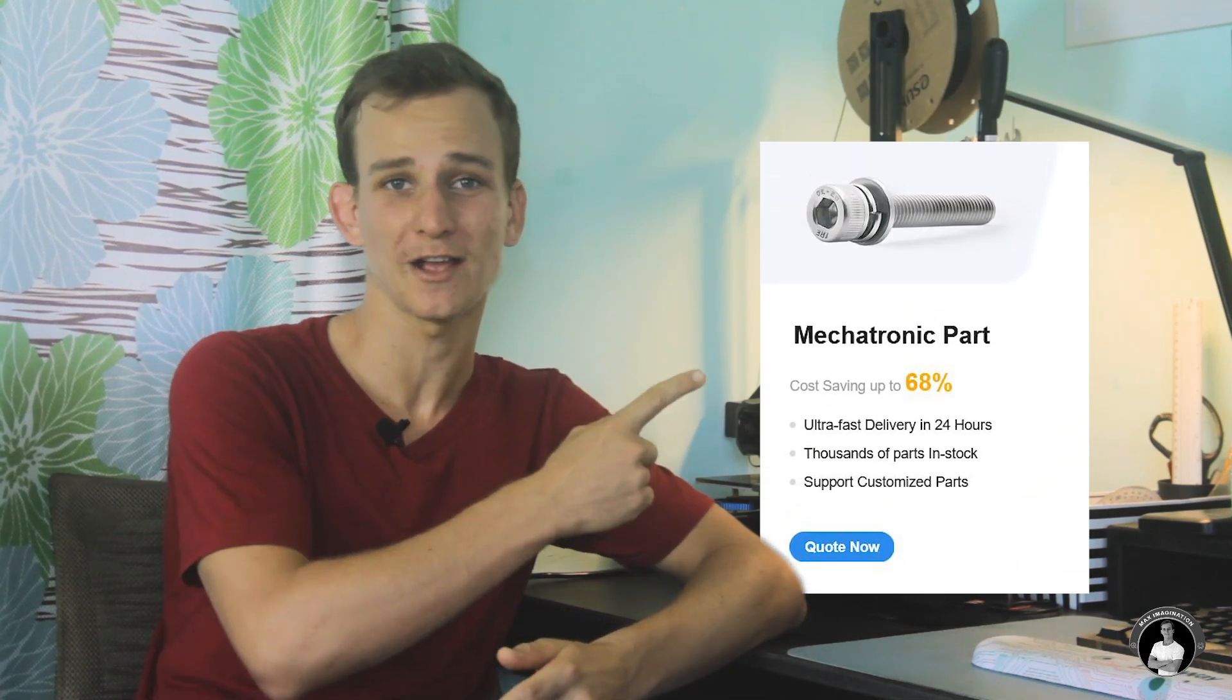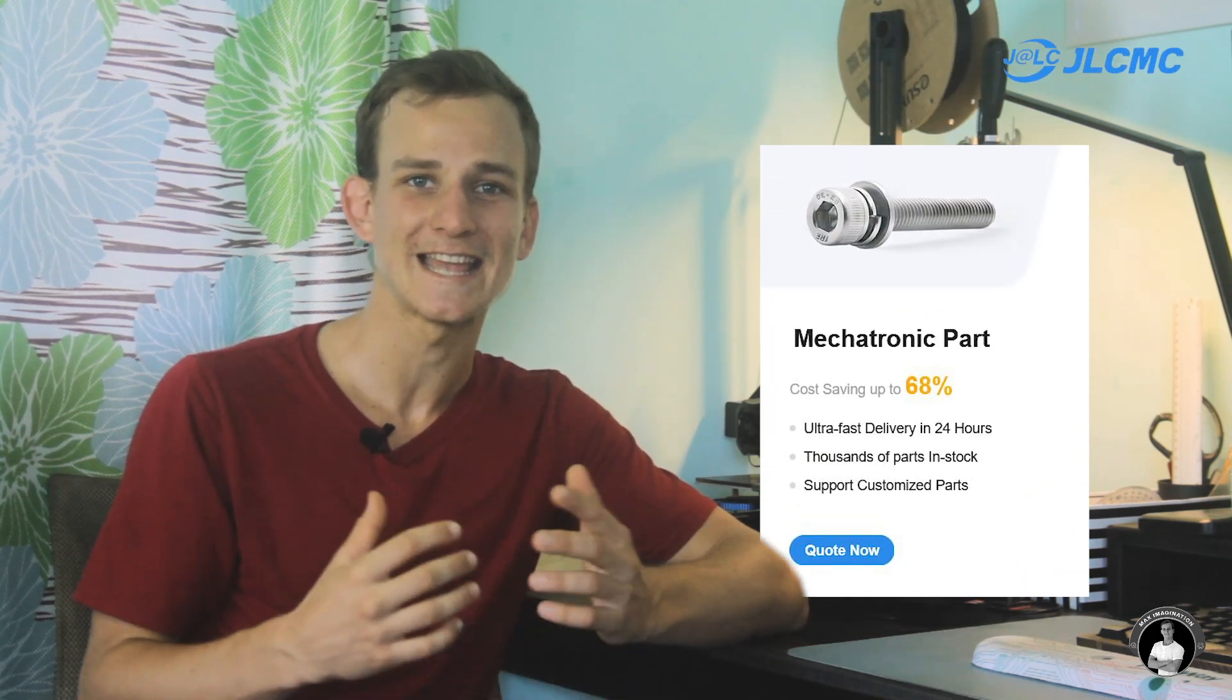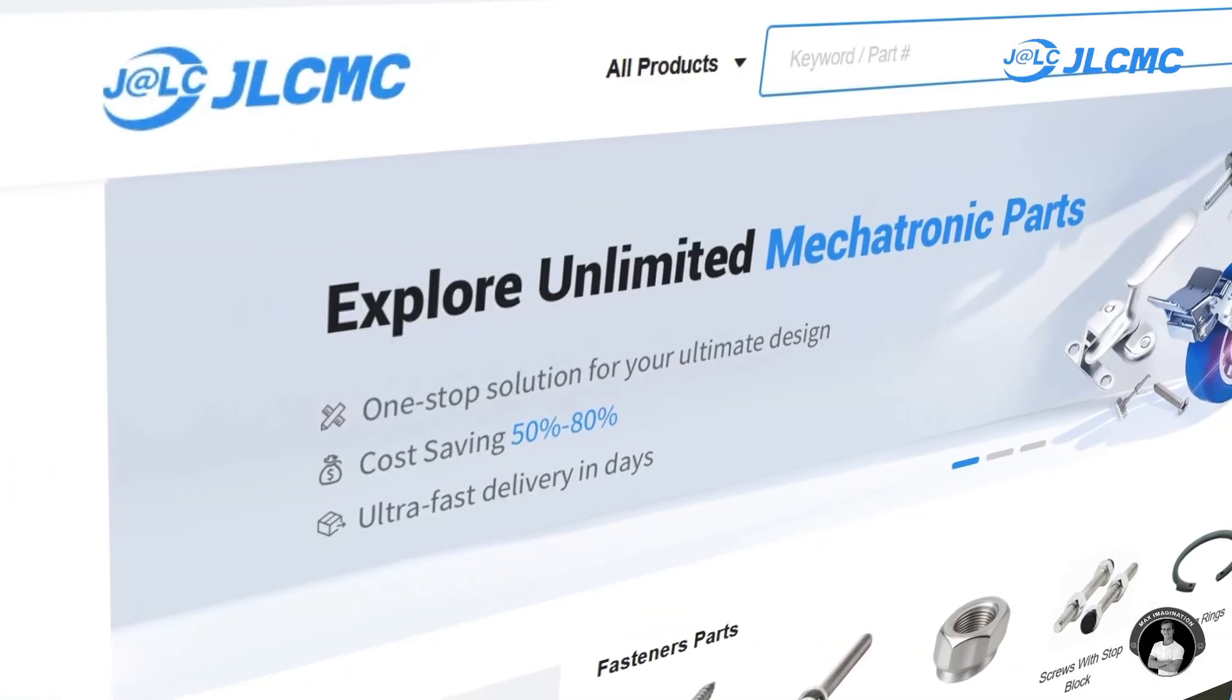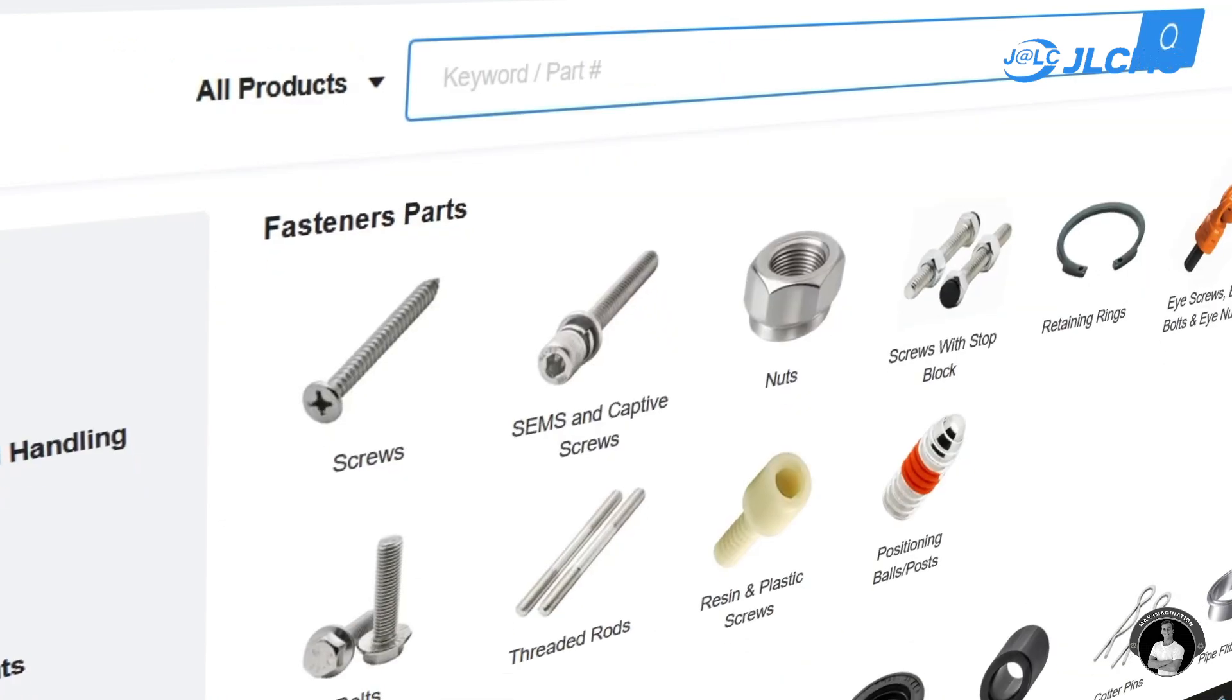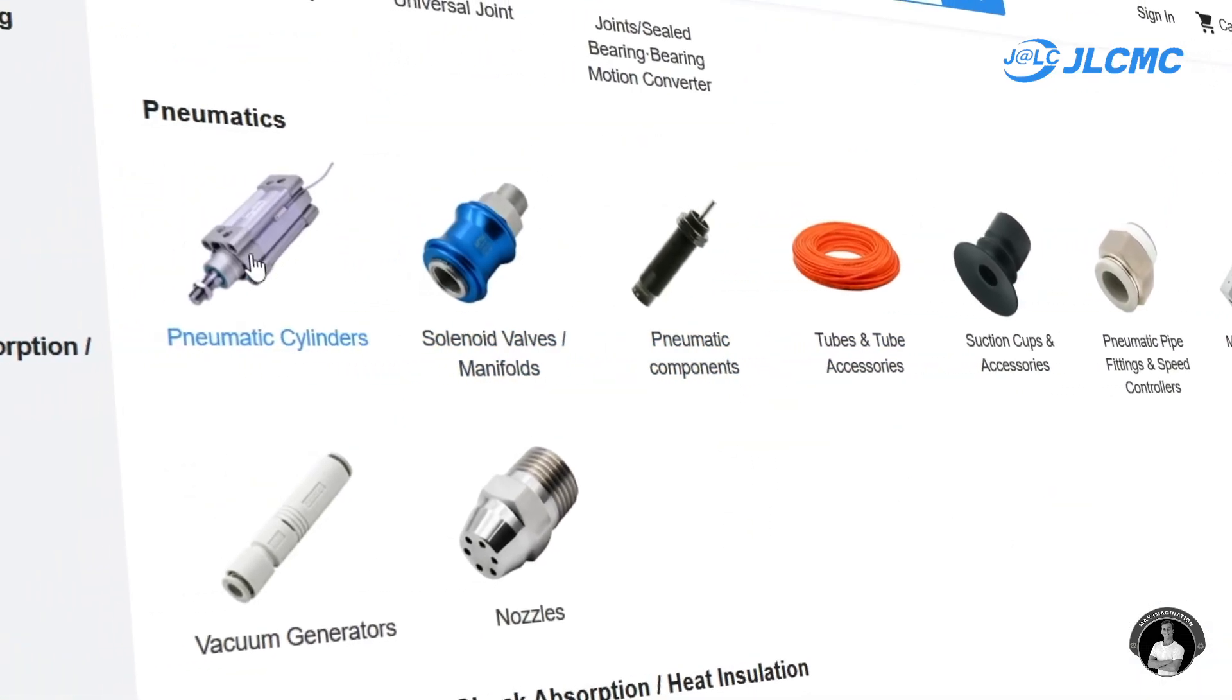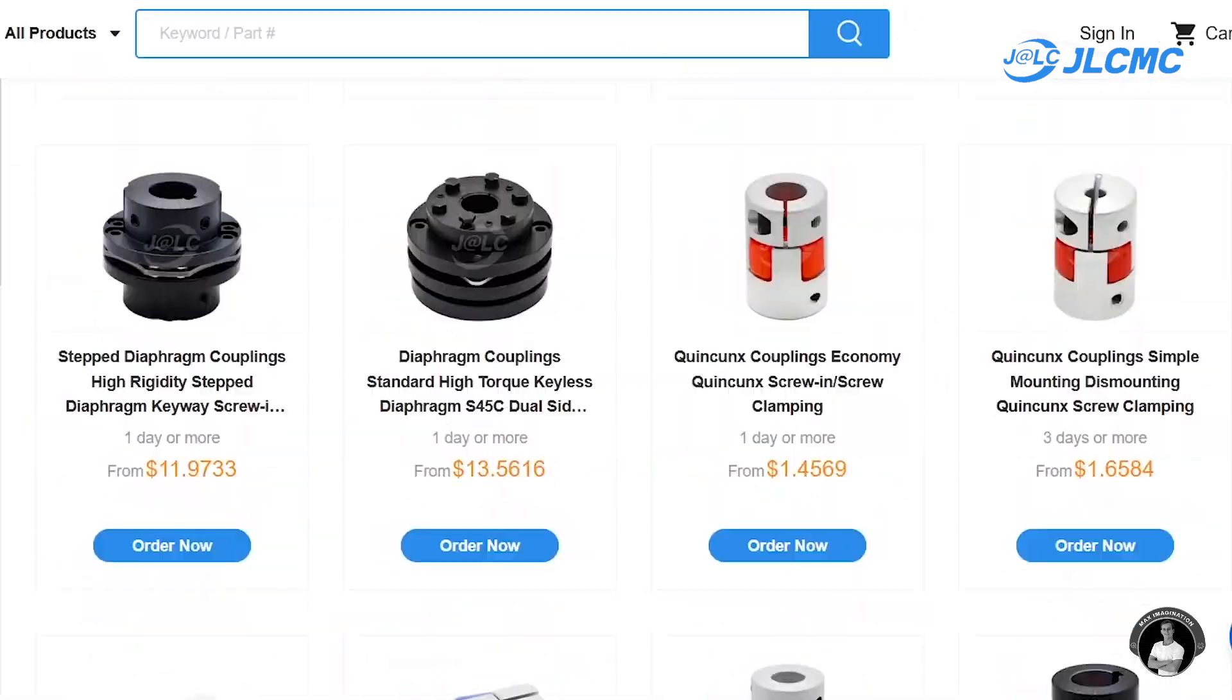But that's not all. JLCPCB excels in PCB manufacturing and CNC metal machining. Need robust parts? They've got you. Plus, for you robotics enthusiasts, explore JLC's new service, JLCMC, an online mechatronics parts store offering unlimited industrial grade parts. From your everyday nuts and bolts to complex components such as pneumatic valves, gears, pulley systems, and so much more.